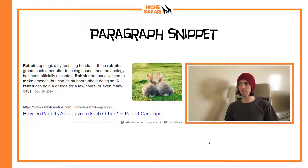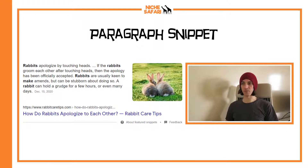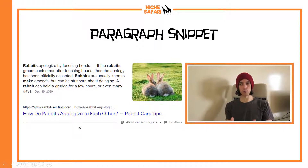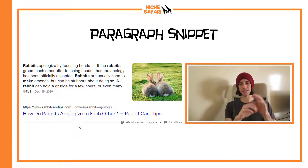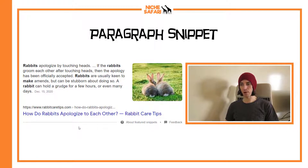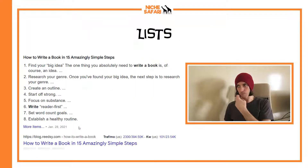Here's an example of a paragraph snippet. For the search query 'how do rabbits say sorry,' you can see a brief explanation: 'Rabbits apologize by...' followed by a short paragraph. Rabbitcaretips.com wrote that, and Google took that paragraph and placed it in the featured snippet, putting Rabbitcaretips.com at the very top of Google search results.